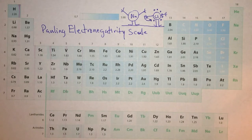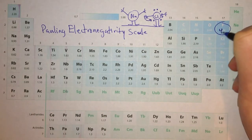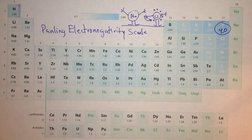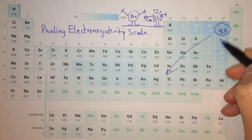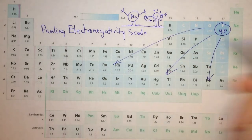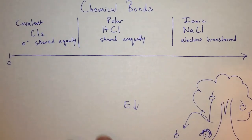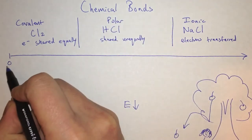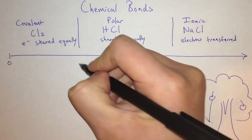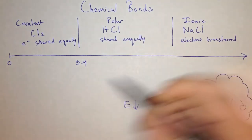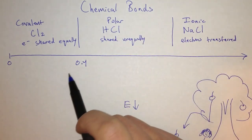Electronegativity is an arbitrary measure of how much an atom pulls on another atom's electrons in a bond. The Pauling scale is one of them. Somebody a long time ago decided that fluorine should have a value of about 4.0, and all other values were determined by comparing them with fluorine. In our class, we define a covalent bond as anything from a difference of 0 to 0.4 on the Pauling scale between the two atoms.